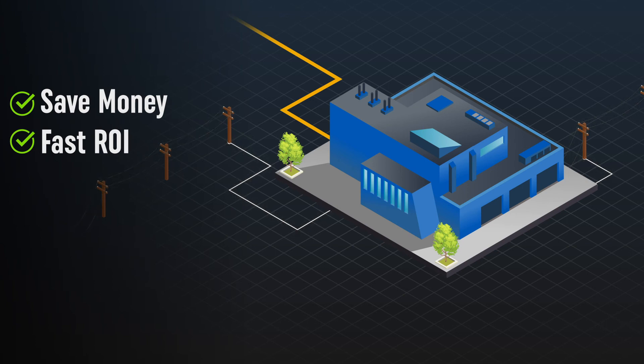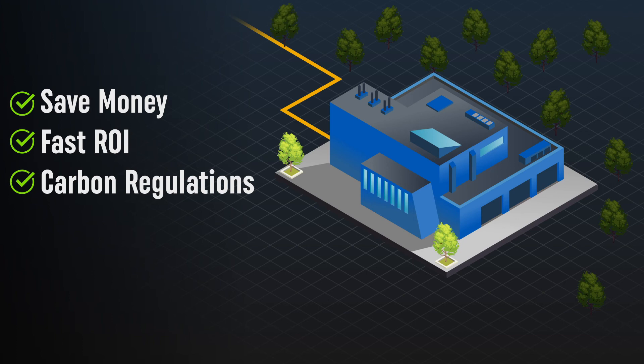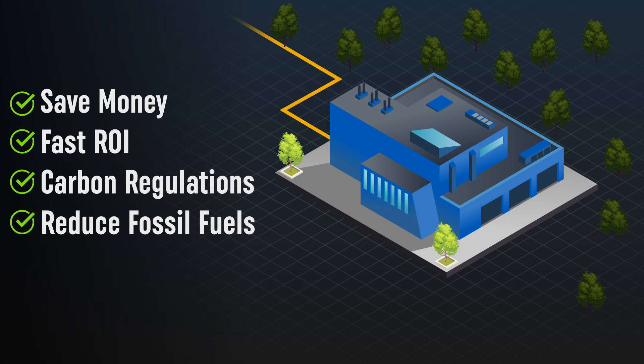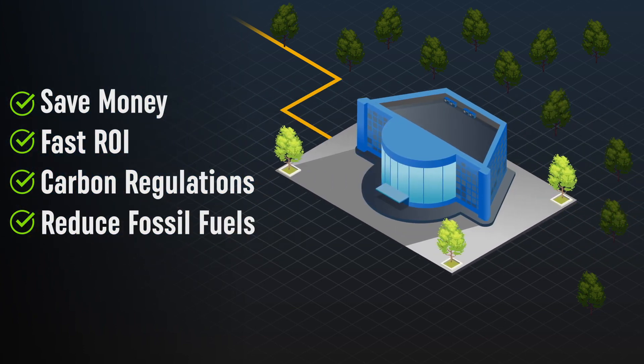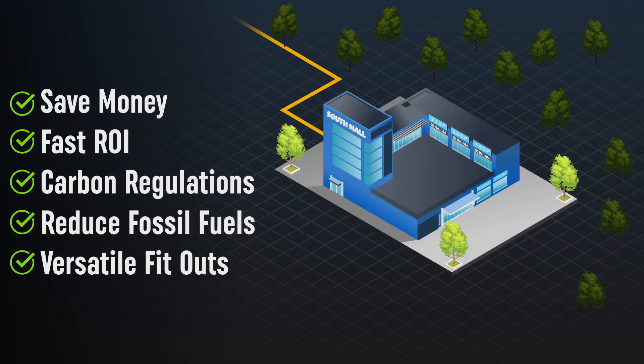The CHP units are all compliant with government carbon emission regulations and reduce the demand for coal-generated electricity. These versatile units can be easily made to fit a wide range of industrial and commercial fit-outs to ensure your operations are more energy efficient, economically viable and sustainable.